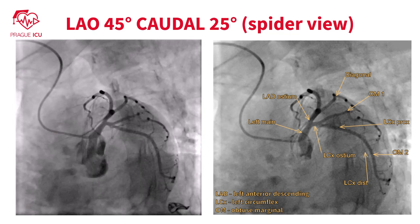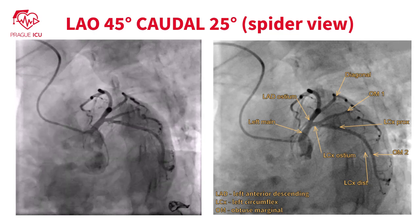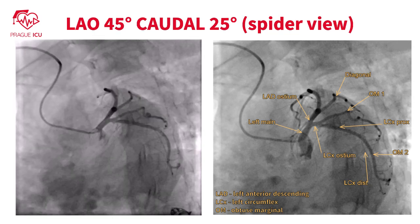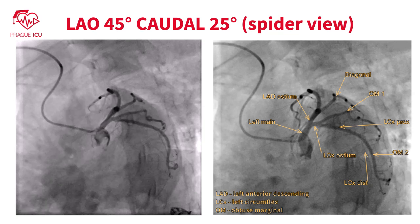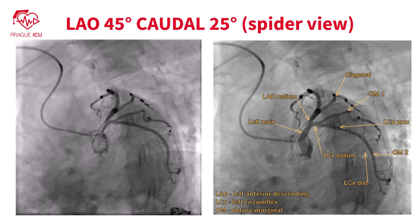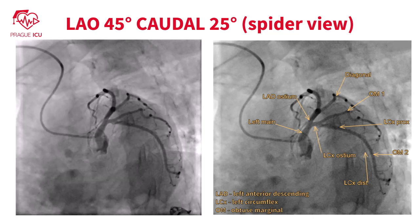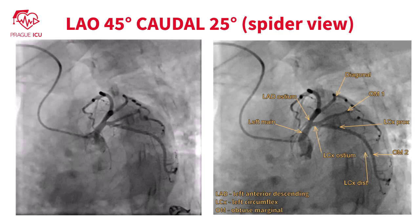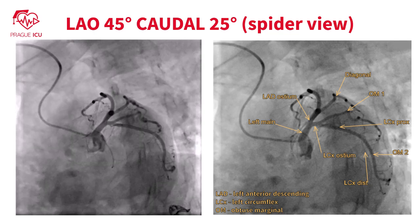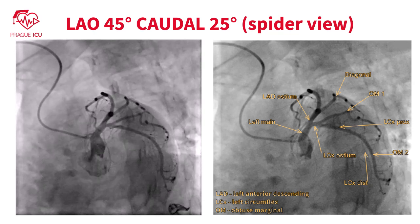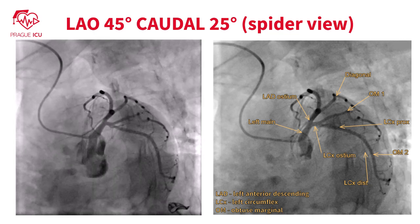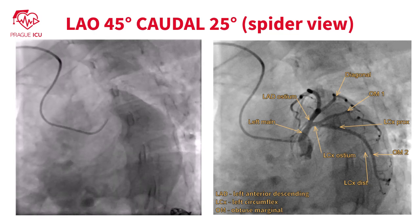The view is not good for visualizing the distal parts of the left system and foreshortens the coronary branches. Yet this view is useful during coronary angioplasty to check whether a stent placed in the proximal LAD is impinging on the left main or likely to pinch the ostium of the left circumflex.